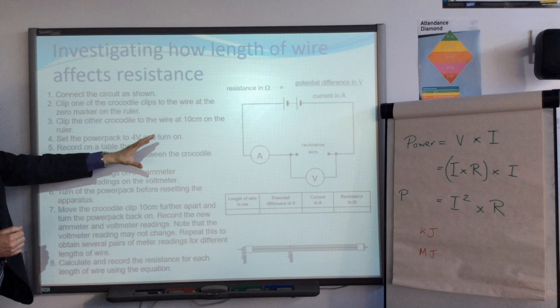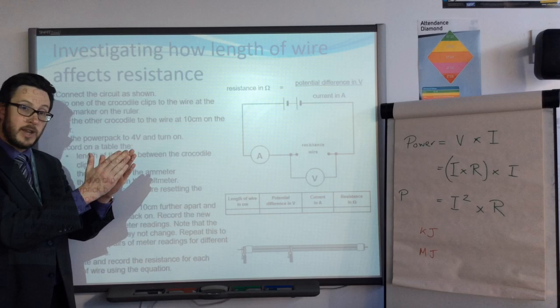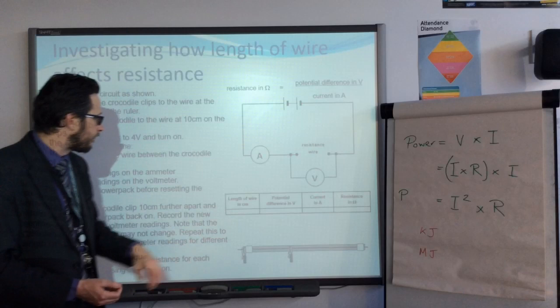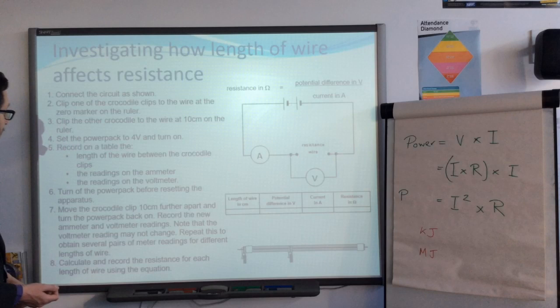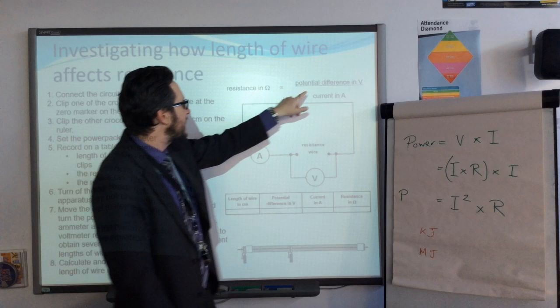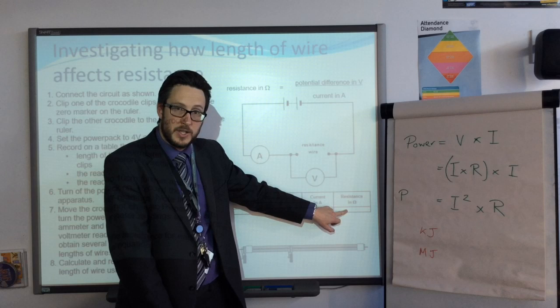You need to set up the circuit as shown. Make sure one of the crocodile clips is on zero on your ruler. Set the other crocodile clip, I would suggest initially starting at 10cm which will be quite close together. Set the power pack to 4V and then turn it on. You need to record the length of the wire which may well be 10 if that's what you're starting at. Record the reading on the ammeter which is the current in amps, and the potential difference in volts across the wire. Then use the equation V equals IR, but resistance equals potential difference divided by current to find the resistance in that wire. Because these two things are what you're interested in - does the length of wire affect the resistance?